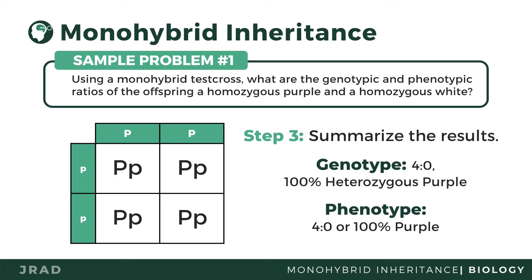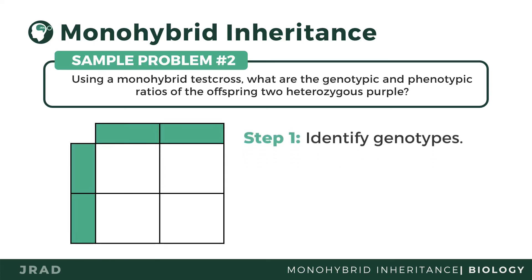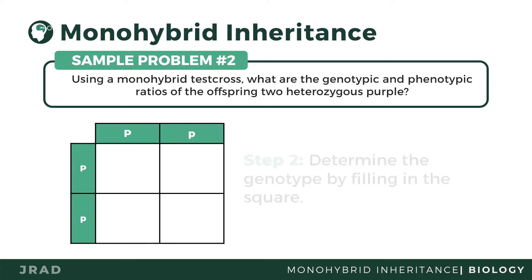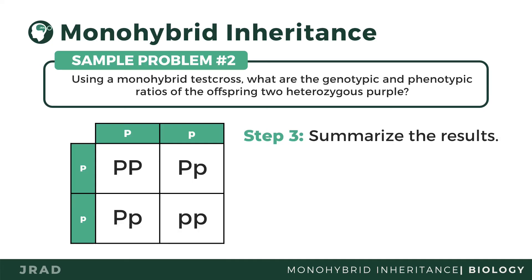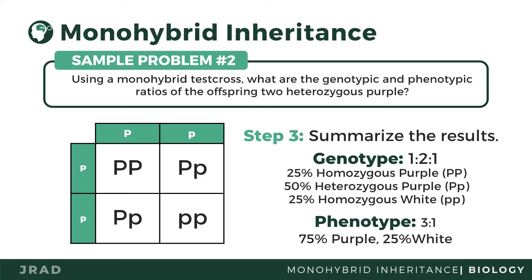Let's try another example. Using a monohybrid test cross, what are the genotypic and phenotypic ratios of the offspring of two heterozygous purple? Let's identify the genotypes of the parents — both are heterozygous purple. The alleles of the parents are placed on top and on the right side of the box. The second step is to fill in the squares to form all possible combinations. Based from the test cross, the genotype of the offspring is 1:2:1, or 25% homozygous purple, 50% heterozygous purple, and 25% homozygous white. The phenotype is 3:1, or 75% chance of having purple and 25% chance of white offspring.